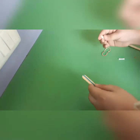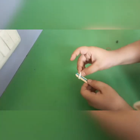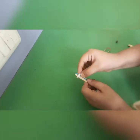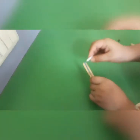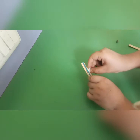Then cut a straw into small pieces so that it is only a little longer than the width of the popsicle stick. Then put it under the rubber band like this.